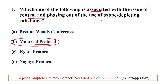The Montreal Protocol was signed in 1987 by the United Nations. It is a global agreement to protect the stratospheric ozone layer. Ozone exists in the stratosphere, and the Montreal Protocol takes charge of phasing out the production and consumption of ozone depleting substances.